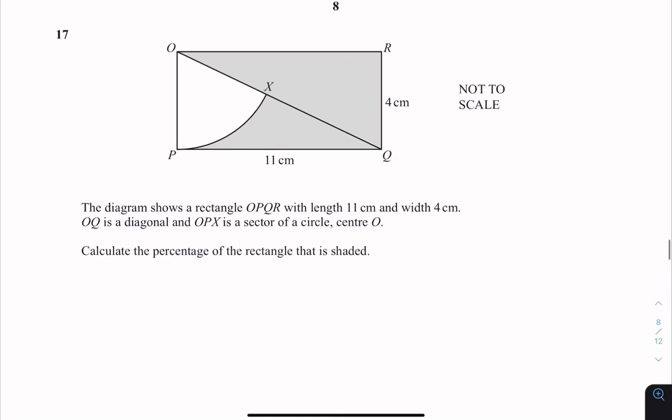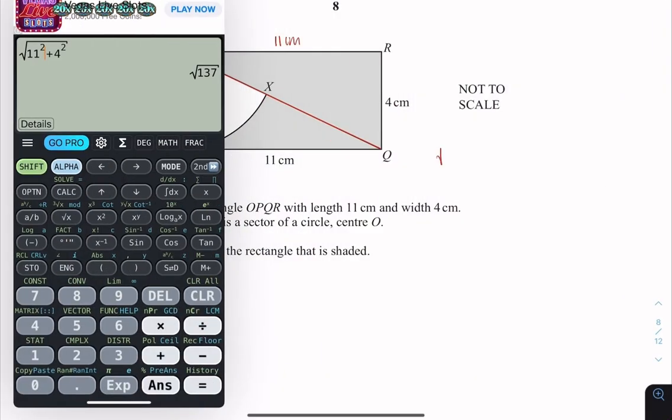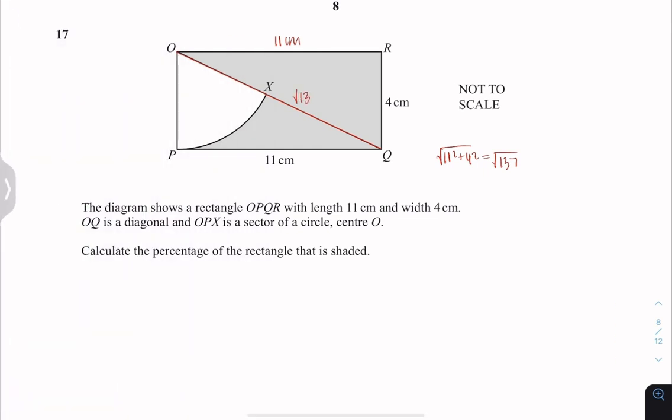On to question 17. This is 11 cm. I'm just labeling everything again to make everything clear. So I realize you did not have to find the length of OQ. But I found it anyways. We're going to find the total rectangular area, which is just 11 multiplied by 4, giving us 44 cm squared.